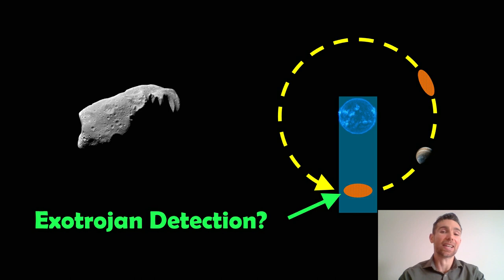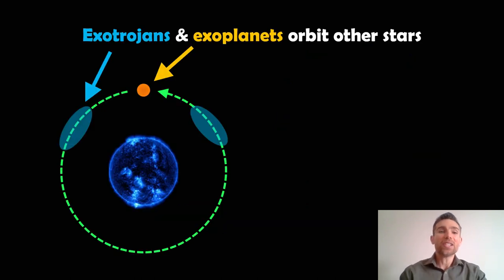So these Trojan objects, these exotrojans and the exoplanets themselves, these orbit other stars. When you've got exo in front of the name, it means that they're extrasolar. It means they're orbiting stars that are not our sun. So other solar systems, other planetary systems.